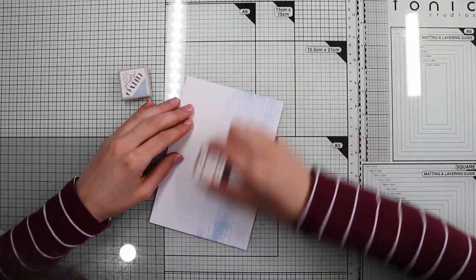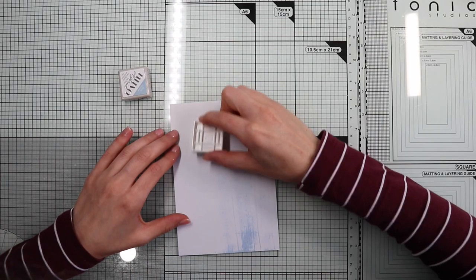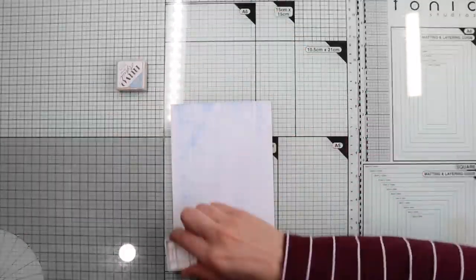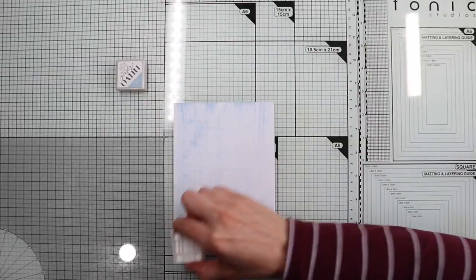To vary the intensity of the color, calibrate the pressure of the ink pad. The harder the pressure, the more color you will spread.